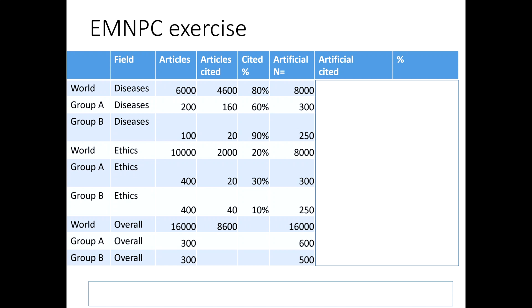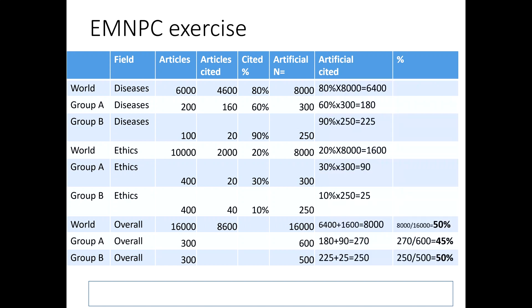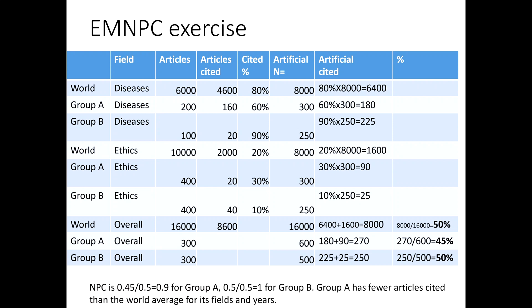If you'd like to practice that, please pause the presentation now and restart when you have your answers. The answers are: 50% for the world, and 45% and 50% for group A and group B respectively — more realistic numbers where the world sample size is much higher than those of group A and group B. Group A has fewer articles cited than the world average for its fields and years, but group B does not.